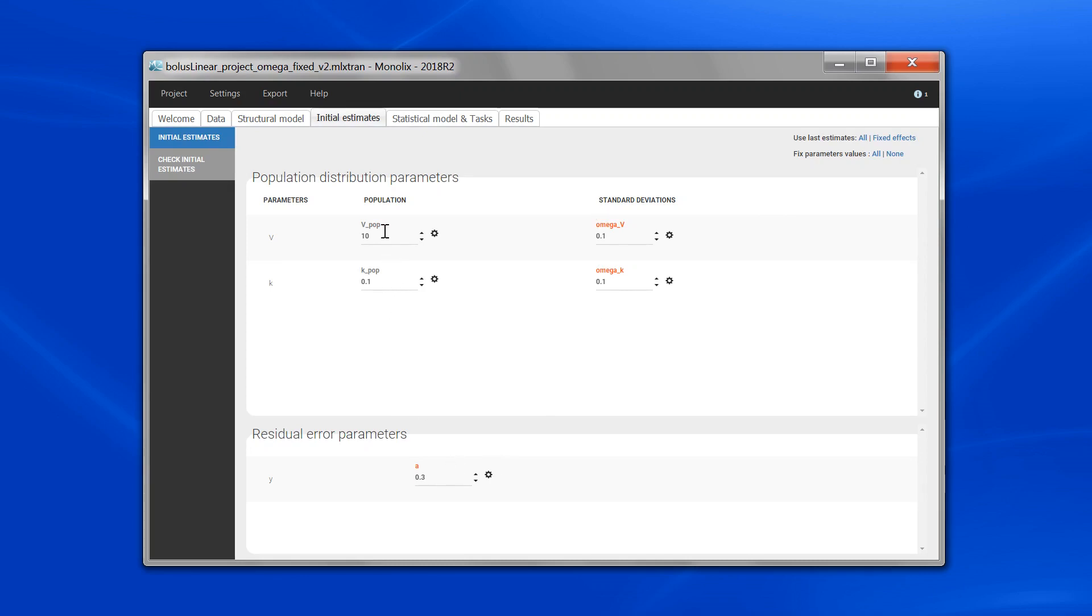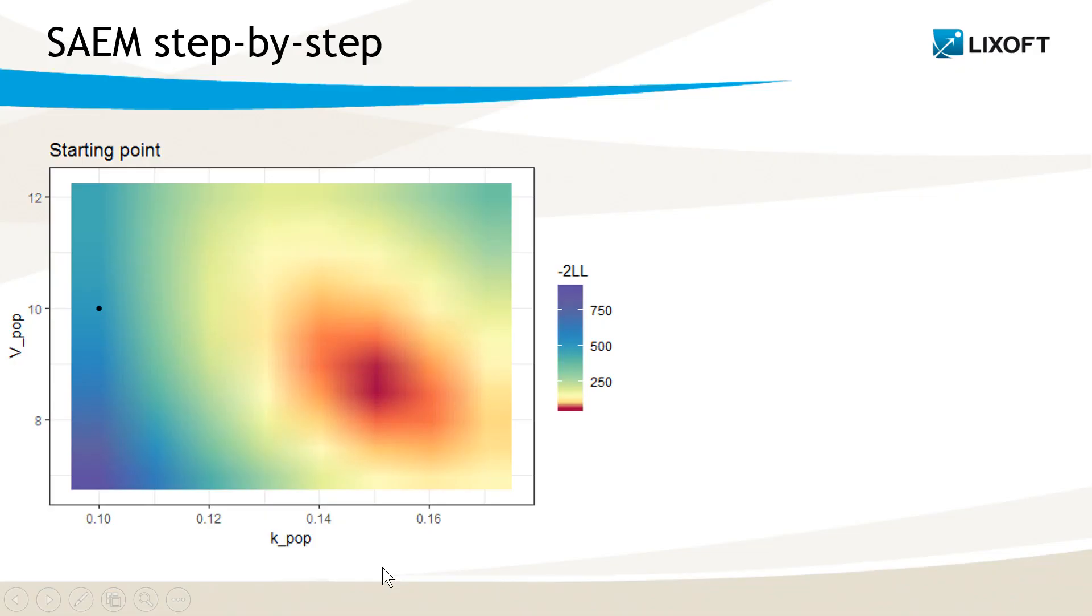In the plot we see here, I have the value of kpop on the x-axis, vpop on the y-axis. The black dot is my starting point, the initial values.